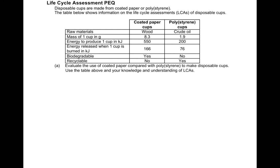The first thing I do when I know it's a question about life cycle assessment is write the four key sections that are required: raw materials, manufacturing, usage, and disposal of the product. I do this so that I can be sure to include all the necessary information in my answer.